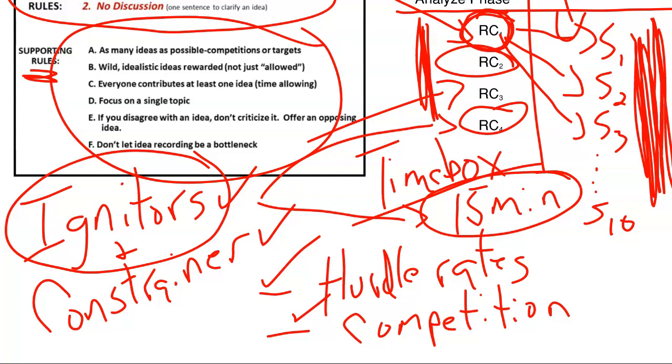Those are examples of igniters. I find that constrainers, though, are sometimes even more effective, where you box people in by saying you can only come up with solutions that are under a certain budget, or they can only be implemented in a very small time period, or all of the solutions need to be green in nature, reduce your carbon footprint. Those are all examples of constrainers. It's surprising how when you box team members in with these constrainers, that somehow they're able to more easily see outside of the box the possibilities. Constrainers can really help.